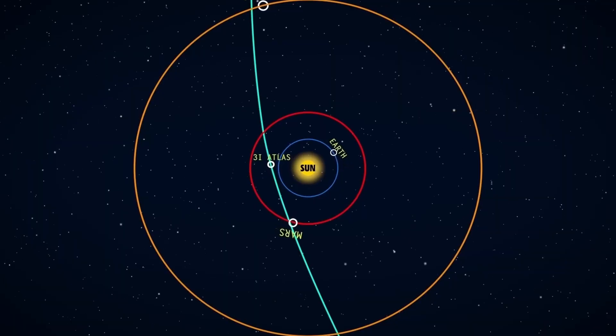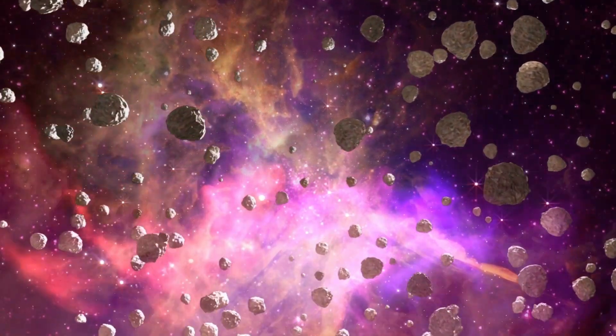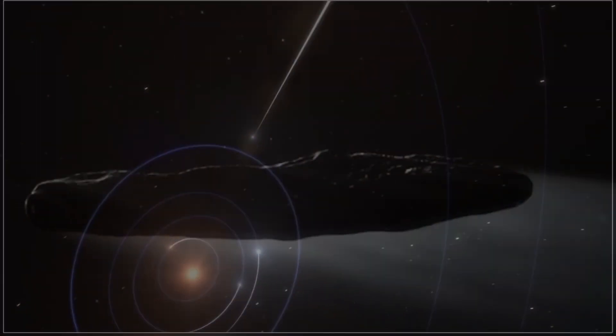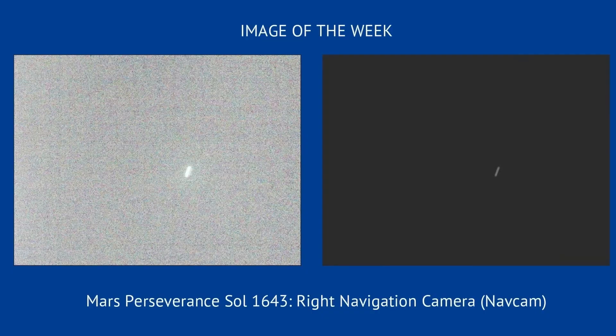As 3i Atlas fades from sight, its story is just beginning. We've measured its chemistry, mapped its path, and glimpsed how alien the familiar can be. We've seen what billions of years of galactic radiation can do to matter. And for the first time, we've touched material from beyond the solar system. Not in theory, but in data, in spectra, in numbers.